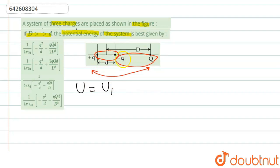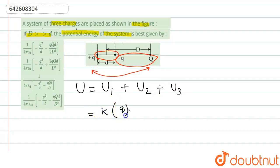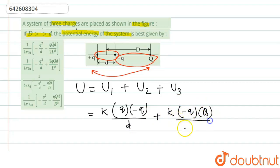The total potential energy will be U1 due to +q and -q, plus U2 for -q and capital Q, plus U3 for +q and capital Q. For U1, we can write k times (+q) times (-q) divided by the distance between them, which is d. Plus k times (-q) times capital Q divided by the distance between them.